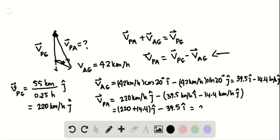Let's rewrite it: VPA equals 234.4 kilometers per hour j-hat minus 39.5 i-hat.